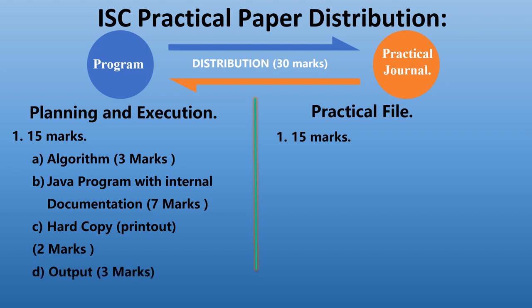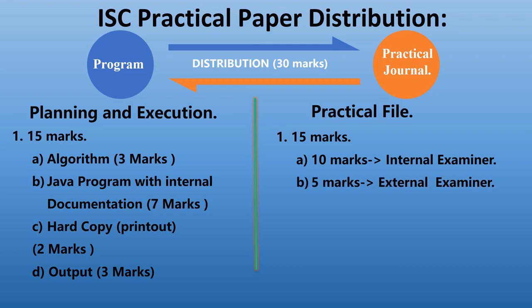The output — referring to the output of the terminal window where you show all the execution of the program — carries three marks, making a total of 15 marks for the planning and execution section. Looking at the practical file, the 15 marks are further divided: 10 marks allotted by the internal examiner and five marks allotted by the external examiner, making a total of 15 marks. This refers to the practical file that you have been creating throughout the year. Together, this makes a total of 30 marks.